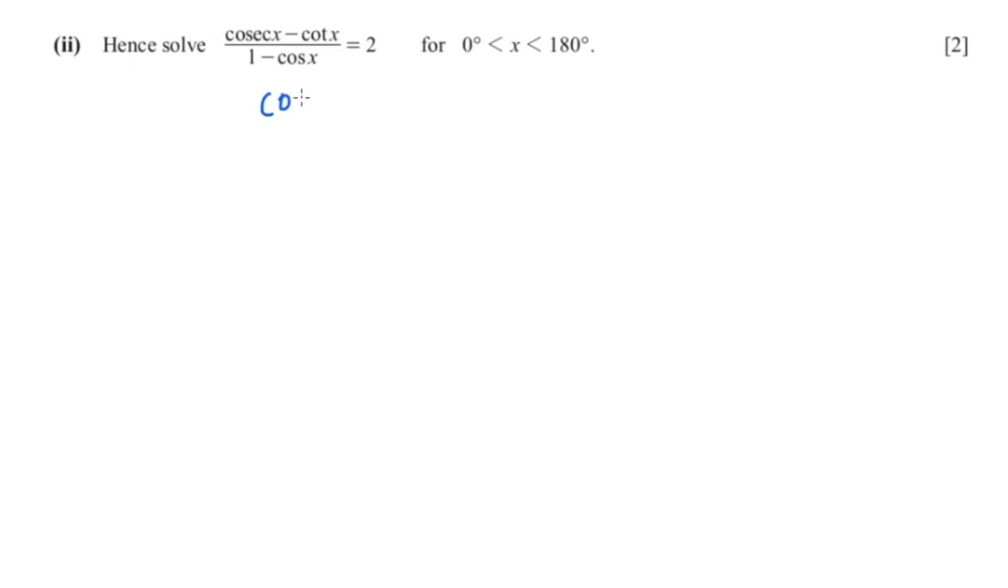Moving on to the next question, we know that this equals cosecant x. So cosecant x equals 2.